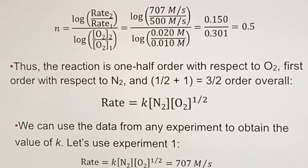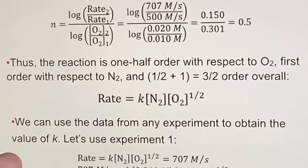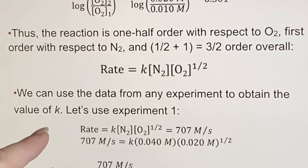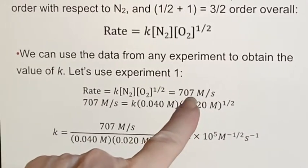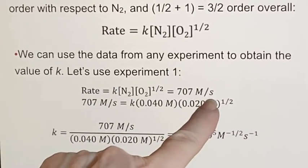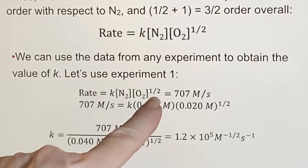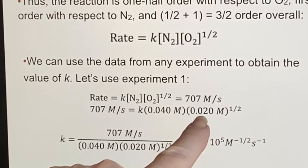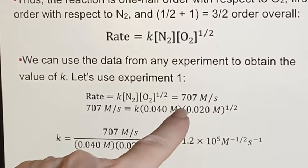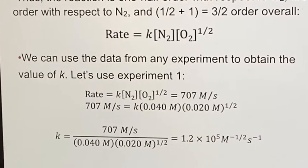And then lastly, we're supposed to find out the value of K. And we can use any experiment. Here they've decided to pick experiment one where they saw that the rate was 707 molarity per second. Put in the numbers for these, the 0.04 and the 0.02 moles. Raise that to the first power, that to the one half power.